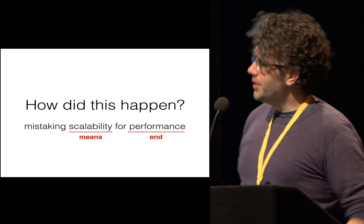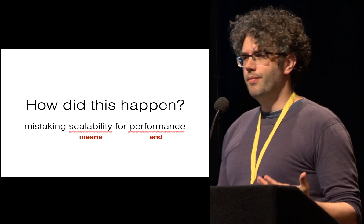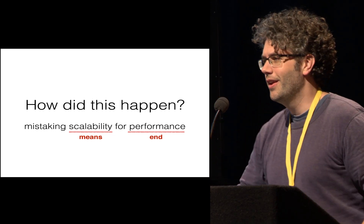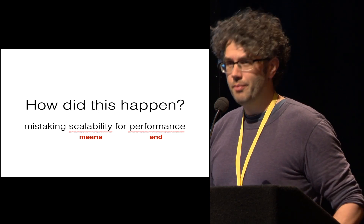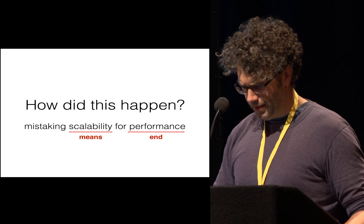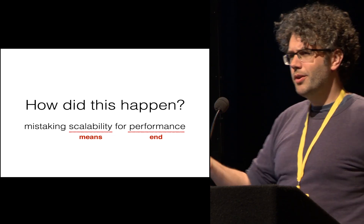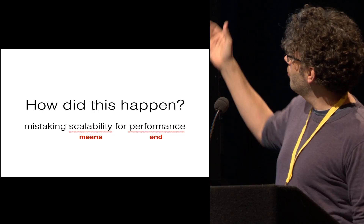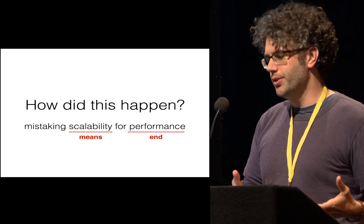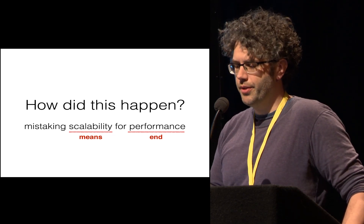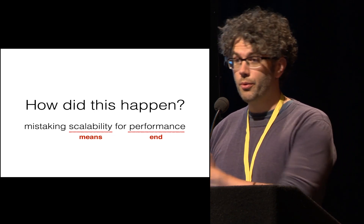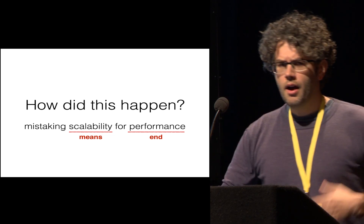This raises existential angst: how did we get to a state where our systems are not actually faster on these problems than a naive one-off computation on a laptop? Our analysis was that the systems community has fetishized scalability. Scalability is really exciting — if I have scalability, eventually I'll become Google. But mistaking scalability, which is fundamentally a means, for performance, which is what you actually want, is the core problem.